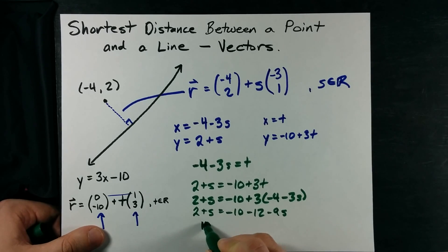I'm going to put all my s's on one side. That's 10s on the left. I'm going to put all my numbers on the other side. It's negative 24. So my s turns out to be negative 2.4.